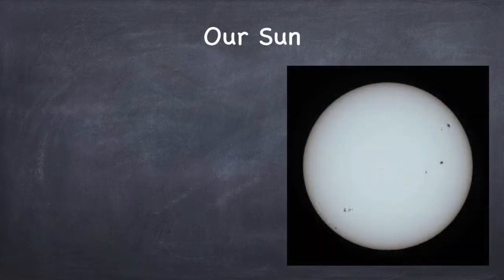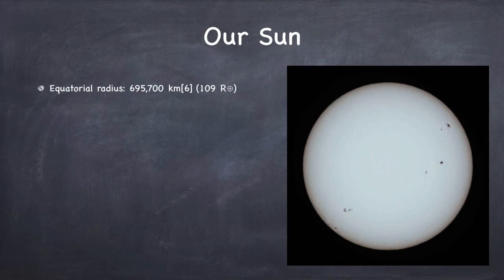First of all, this is an image of our sun with sunspots and so on. It has a size that's about a hundred times, a little over a hundred times the size of the Earth. On the other hand, its volume is about 1.3 million times the Earth's volume.